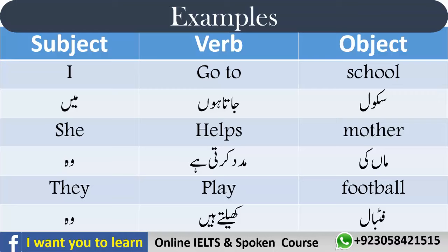'They play football' — وہ football کھیلتے ہیں۔ They ایک سے زیادہ لوگوں کے لیے۔ 'Play' — کھیلنے والا action ہے، تو یہ verb ہے۔ وہ کونسی چیز کھیل رہے ہیں؟ Football — یہ object ہے۔ اگر آپ صرف کہیں 'وہ کھیلتے ہیں' تو آگے والا confused ہو جائے گا — کونسی game؟ جب آپ football یا cricket mention کریں گے تو وہ آپ کا object آ جائے گا۔